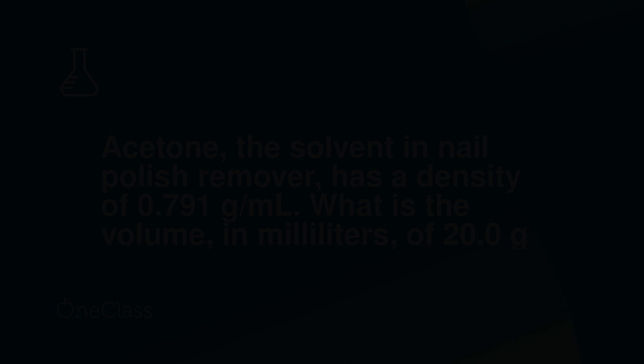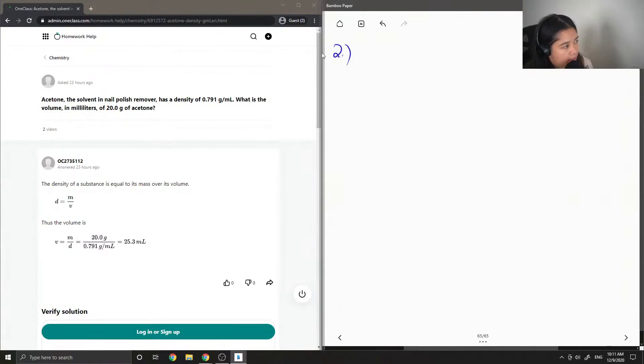Okay, so now let's move on to question number two. Solvent in nail polish remover has a density of 0.791 grams per milliliter. What is the volume in milliliters of 20 grams of acetone?